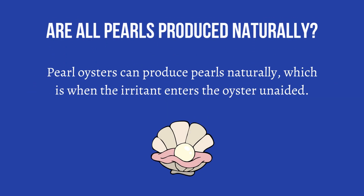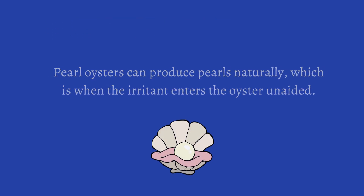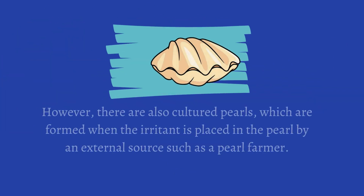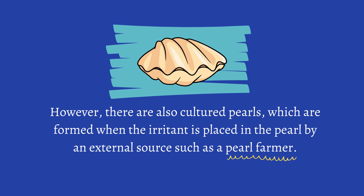Pearl oysters can produce pearls naturally, which is when the irritant enters the oyster unaided. However, there are also cultured pearls, which are formed when the irritant is placed in the pearl by an external source such as a pearl farmer.